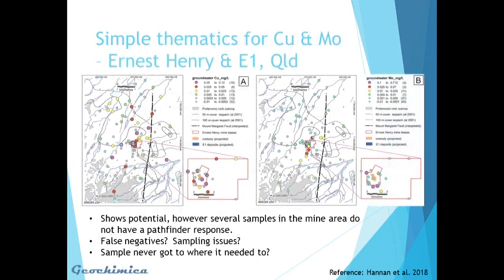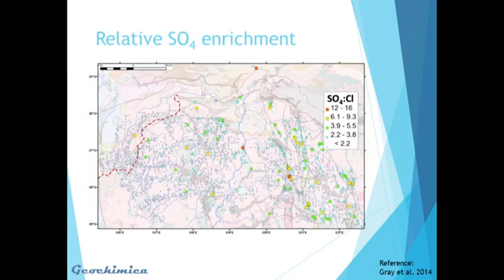Furthermore, a relatively simple interpretation technique is to look at simple multi-element indices involving addition and subtraction of various elements. This slide shows simple thematic maps for copper and molybdenum taken from Ernest Henry in Queensland. The mine area does show some potential using copper and moly; however, we notice that several samples in the mine area don't show a pathfinder element response. Are these false negatives — were there sampling or sample preparation issues — or was it the case that the groundwater just never got to where it needed to be?